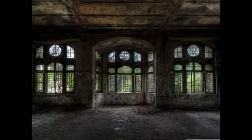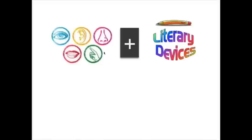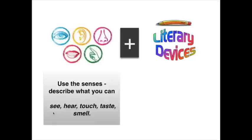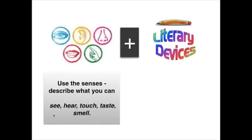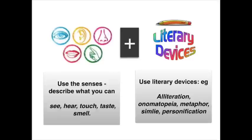So when you're writing to describe, you need to use the senses plus literary devices. The senses are what you can see, hear, touch, taste and smell. Literary devices is the general term we use for things like alliteration, onomatopoeia, metaphor, simile or personification — the techniques writers use to improve the effectiveness of their writing and make it more visual and enjoyable to read.